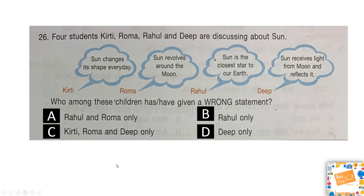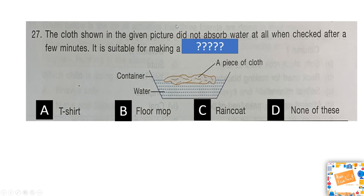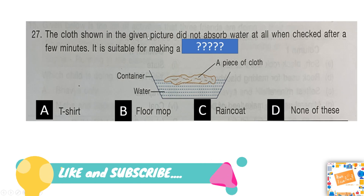The right answer is option C. Keerti says the sun changes its shape every day — that's incorrect, it is true about the moon. Roma says the sun revolves around the moon — no, it is actually the moon which revolves around the earth. And Deep says the sun receives light from the moon — no, it's actually the moon that receives light from the sun. So C is our correct answer.